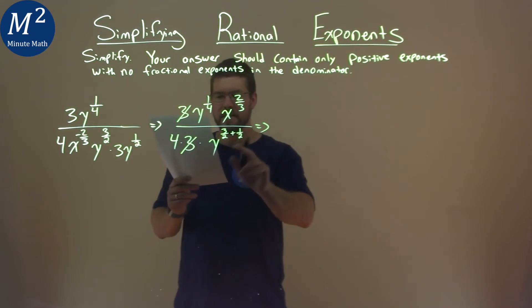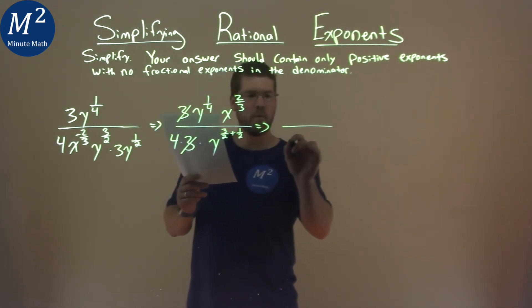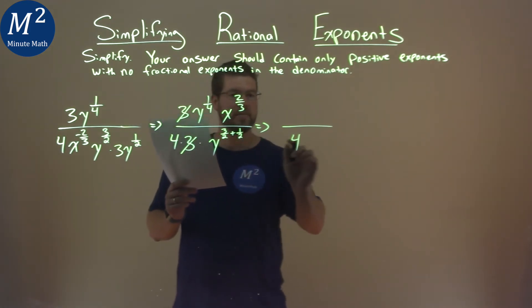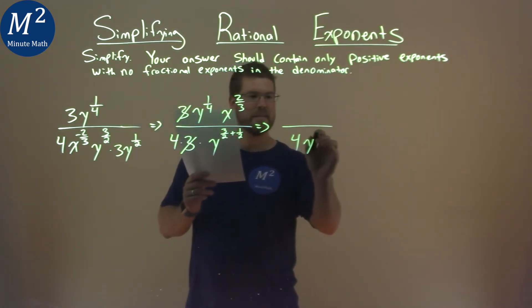Now let's go add our denominator here. So we have a 4, and we have y. Well, 3/2 plus 1/2 is the second power. So we have 4y to the second power.